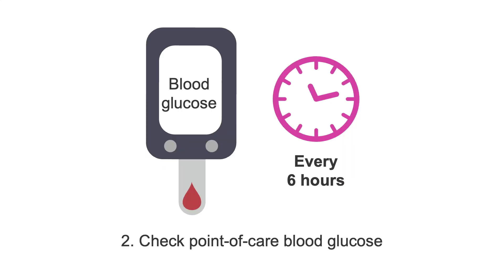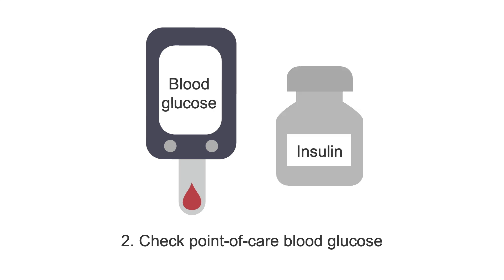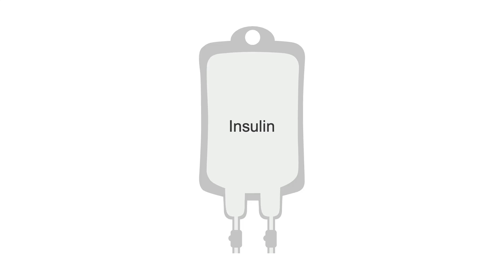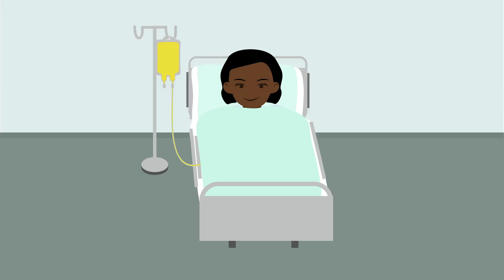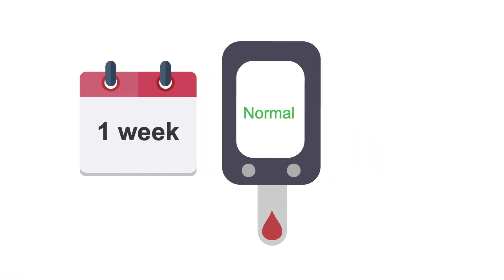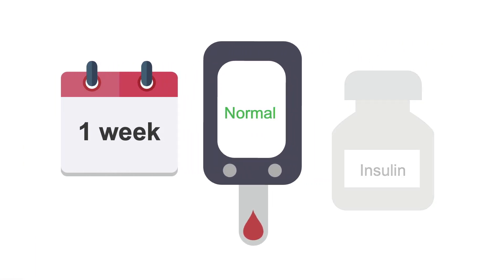Second, check point-of-care blood glucose every six hours and start sliding scale regular insulin coverage to control blood glucose levels. If your patient is in the ICU and blood glucose is very high and hard to control, they may need a regular insulin drip. Once a patient has been stable on their goal TPN for at least a week with normal blood glucose not requiring any insulin, the regular blood glucose checks and sliding scale insulin can sometimes be stopped.